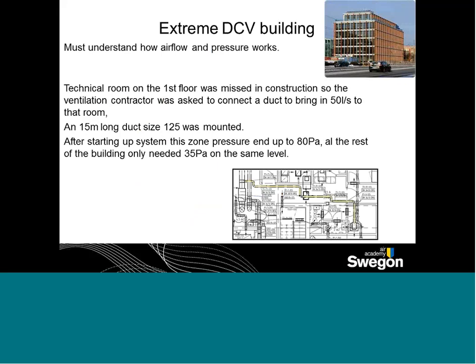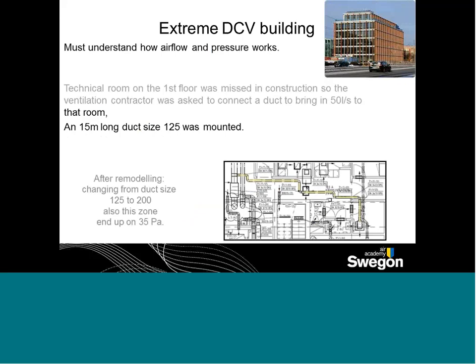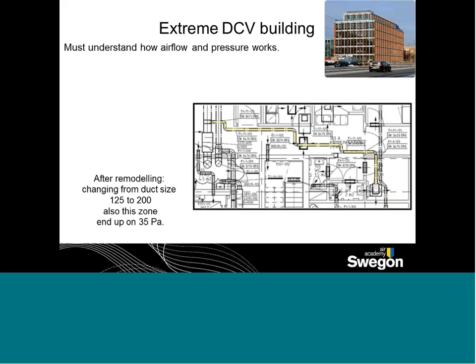One thing I wanted to highlight: during construction they actually missed one of the technical rooms and put in a 15-metre-long duct to supply some CAV volume into that space. It took the whole system out of balance. They didn't really consider the impact of putting in the CAV system on the rest of the system. So they had to remodel it — changing from 125 millimetres up to 200 millimetres — which lowered the pressure drop, and everything was then in perfect balance at 35 Pascal again. It just needs to be considered and thought through how airflow and pressure work together.